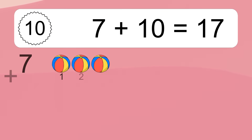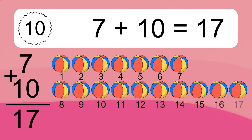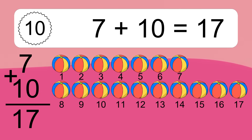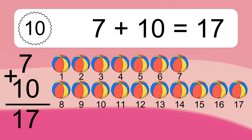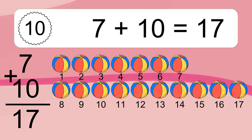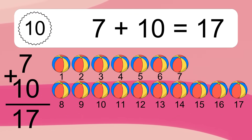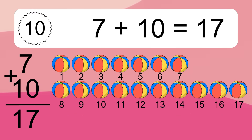7 plus 10 equals what? 7 plus 10 equals 17. Let's count it: 1, 2, 3, 4, 5, 6, 7, 8, 9, 10, 11, 12, 13, 14, 15, 16, 17.